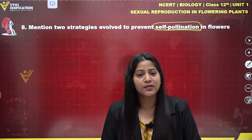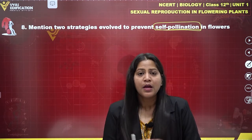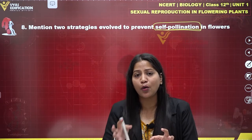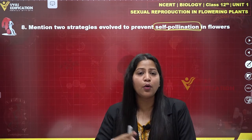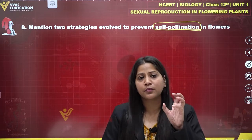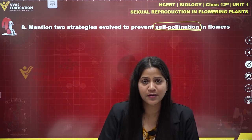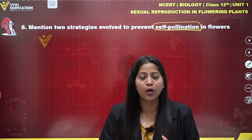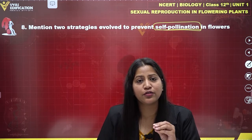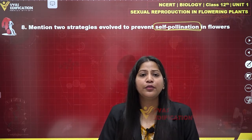The second strategy evolved in plants to prevent self-pollination is protandry or protogyny. These strategies involve the maturation of one reproductive organ before the other. In protandry, the stamen — the male reproductive organ — matures first, and then the female reproductive organ matures. In protogyny, the female reproductive organ such as the pistil or carpel matures before the stamen.